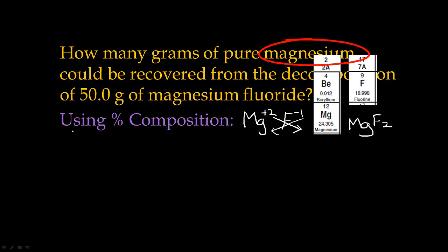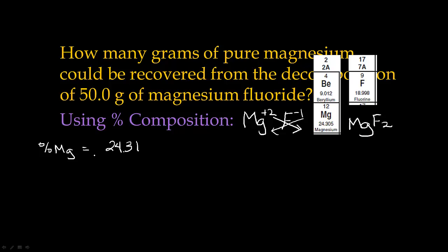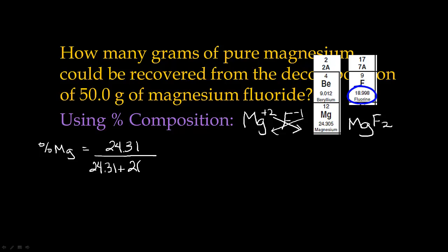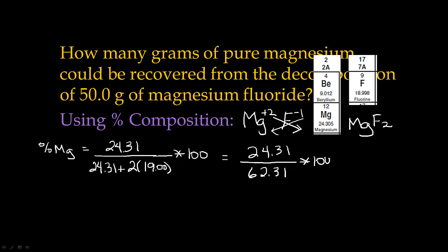We are looking for pure magnesium, so the percent composition for magnesium is going to be the mass of the magnesium in the compound. There's only one, and it's 24.31, divided by the total mass of the entire compound — magnesium and fluorine. So there's one magnesium (24.31) plus two fluorines, so two times 19.00. Then we multiply that by 100, and that equals 24.31 divided by 62.31, times 100. The percent composition of magnesium is 39.01%.